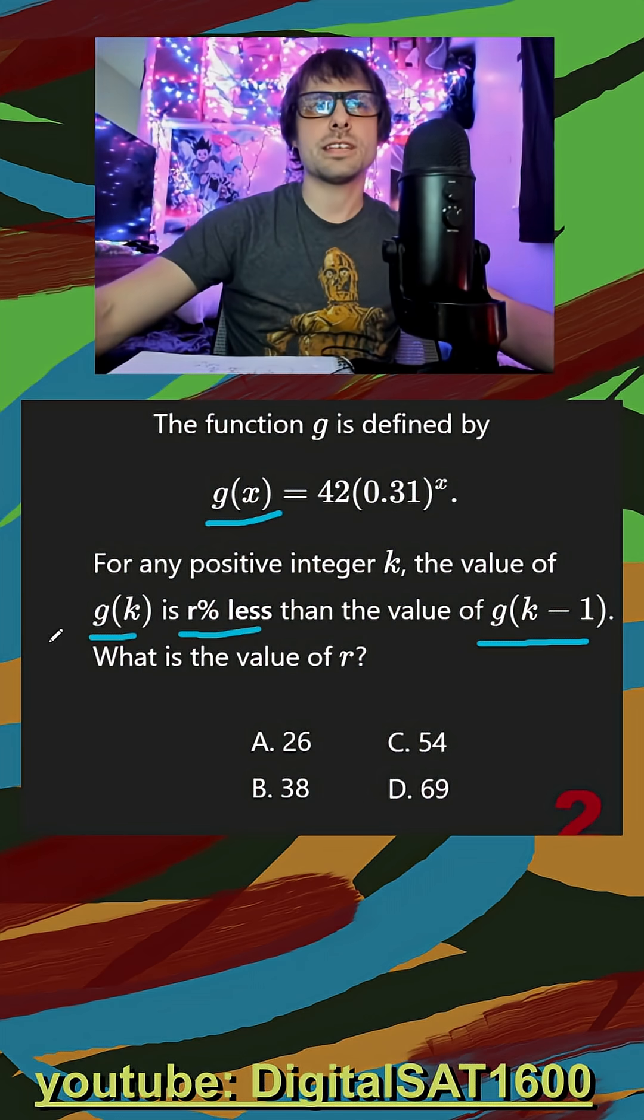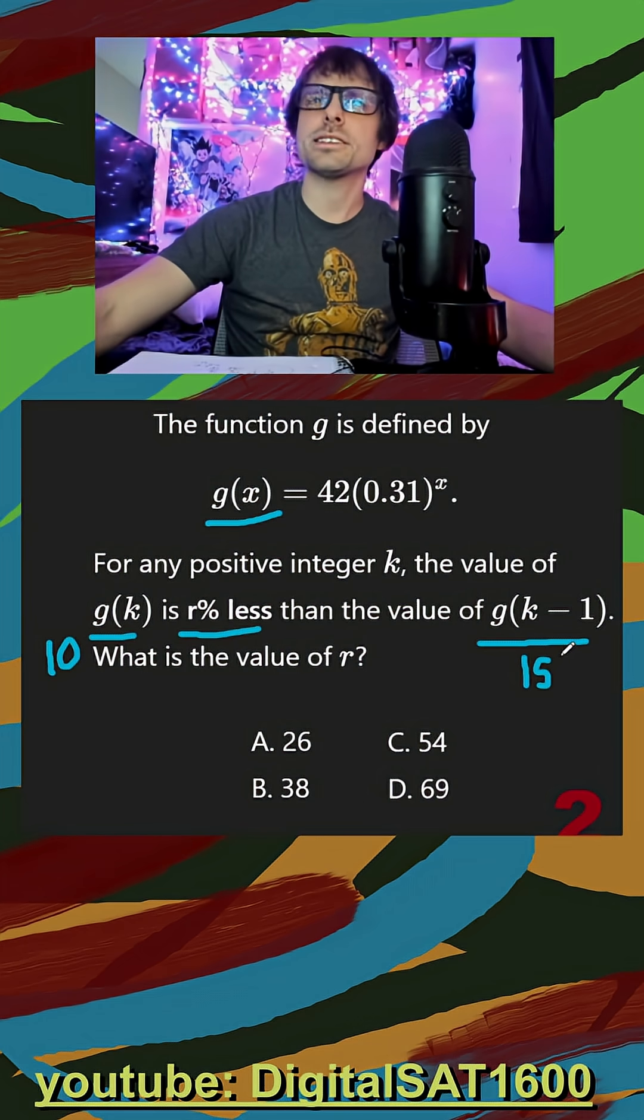So let's make this sound a little easier. Say this was 10 and say this was 15. Well, 10 is r% less than 15. Well, that doesn't sound so bad.